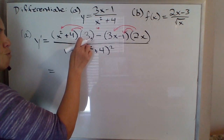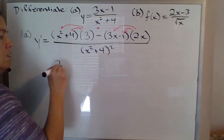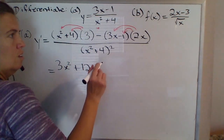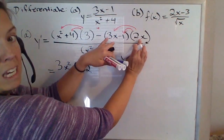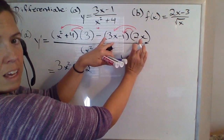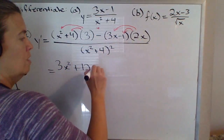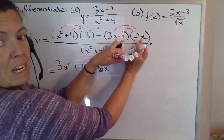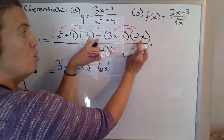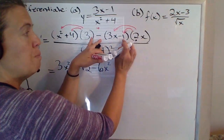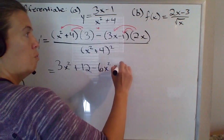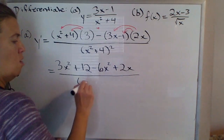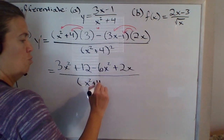So if we distribute the 3, that's 3 times x squared plus 3 times 4. We have to be careful over here — 3x times 2x would be 6x squared with a negative in front, so negative 6x squared. This times this would be negative 2x, but if we also distribute this negative here, that's actually going to be positive 2x. All of that over x squared plus 4, squared.